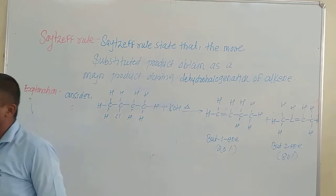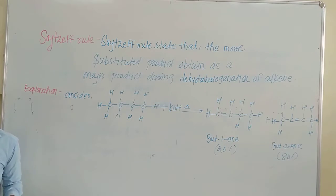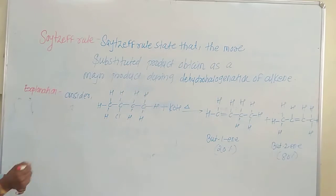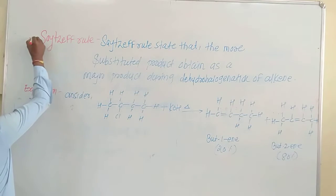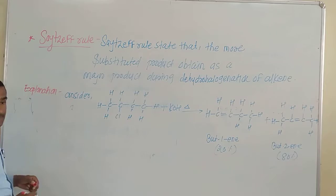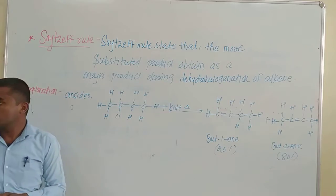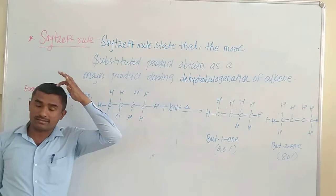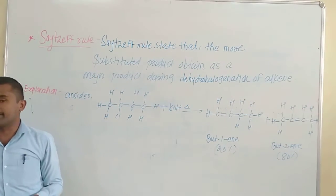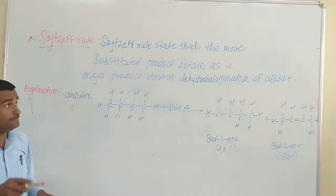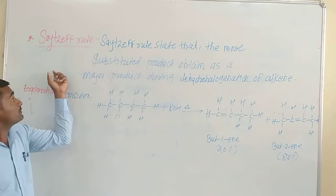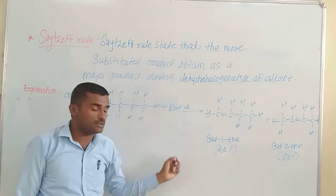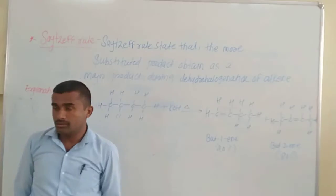Next important rule: the Zaitsev rule. On example, state and explain the Zaitsev rule. This statement is for one mark, and this explanation is for two marks.